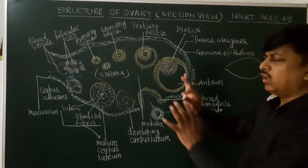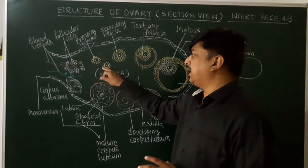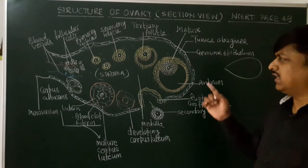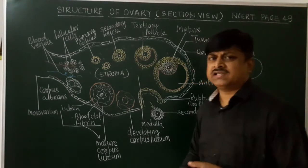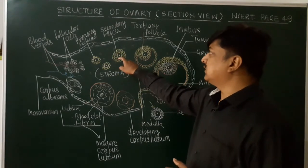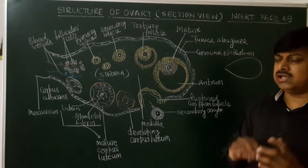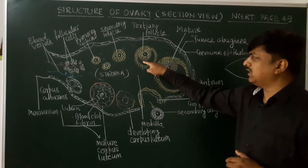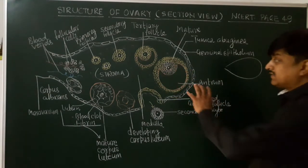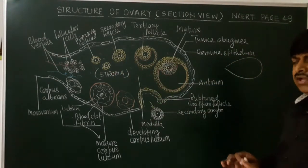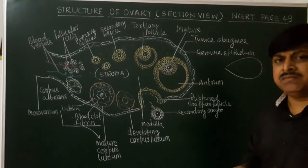Here I am focusing only on the structures visible inside the ovary. You can see many follicular cells, then primary follicles which contain a primary oocyte surrounded by a single layer of granulosa cells, also called follicular cells. Then you can see secondary follicles and tertiary follicles. In the tertiary follicle, you can see the formation of an antrum — a fluid-filled cavity. After that, you can see the mature Graafian follicle. The differences between primary, secondary, and tertiary follicles will be explained during the oogenesis video.